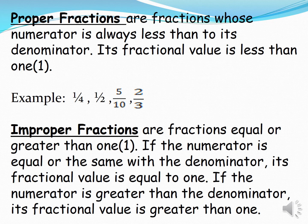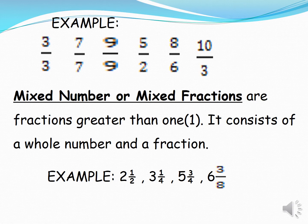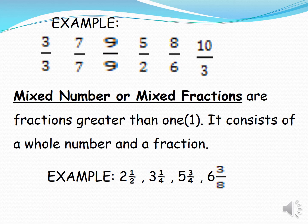Improper fractions are fractions equal to or greater than one. If the numerator is equal to the denominator, its fractional value is equal to one. If the numerator is greater than the denominator, its fractional value is greater than one. Examples: three-thirds, seven-sevenths, nine-ninths, five-halves, eight-sixths, ten-thirds.